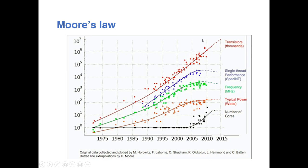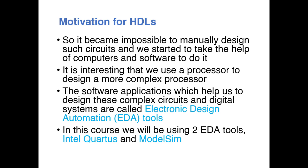Since circuits are becoming more and more complicated, it became impossible to manually hand-draw these circuits - you would need years and years drawing thousands of sheets of paper. So we decided to take the help of computers and software to do this schematic drawing. It's interesting that to design a processor, which is a hardware circuit, we are taking the help of software running on a simpler processor. The software applications we use to design circuits - digital, analog, or any kind - we generally call them electronic design automation tools, or EDA tools. For this course we will be using two EDA tools: Intel Quartus and ModelSim Intel Edition.